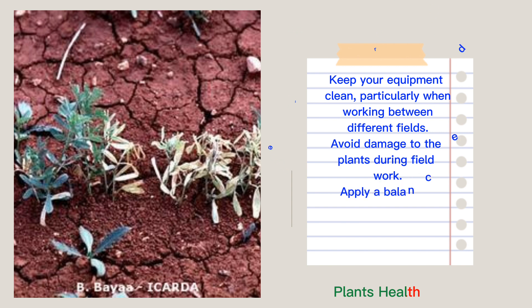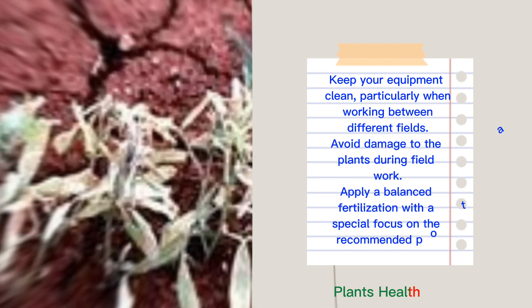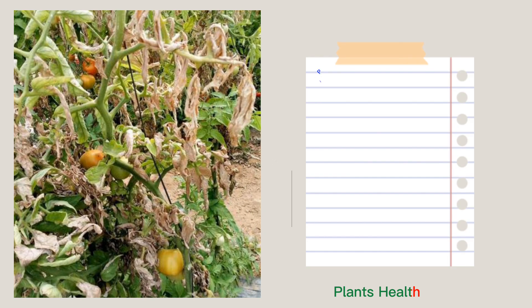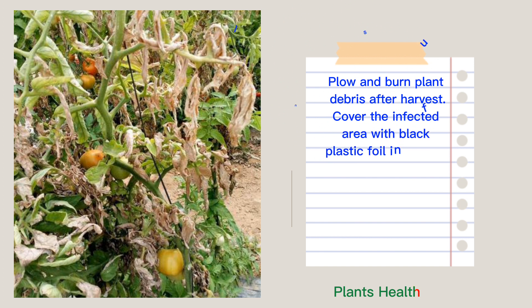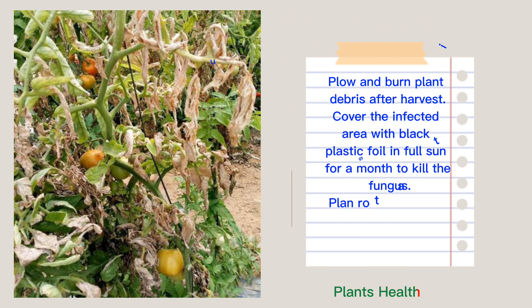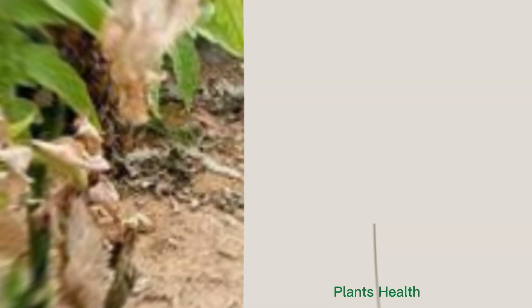Apply a balanced fertilization with a special focus on the recommended potassium levels. Plow and burn plant debris after harvest. Cover the infected area with black plastic foil in full sun for a month to kill the fungus. Plan crop rotations of up to 5–7 years to reduce fungal levels in the soil.